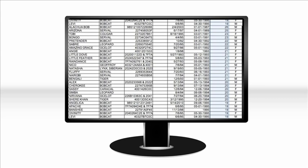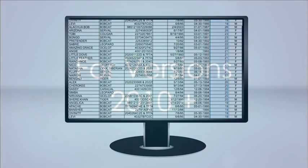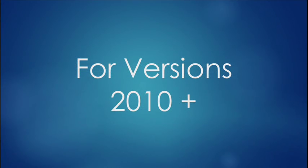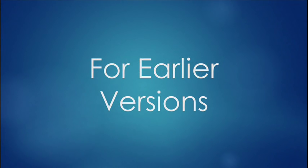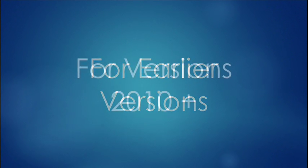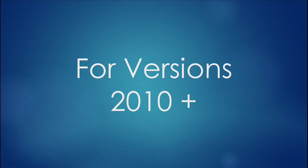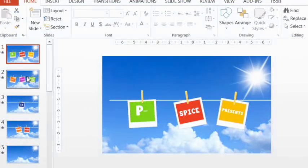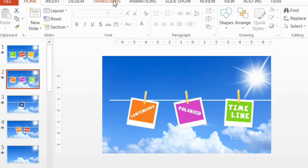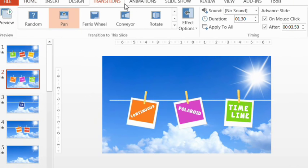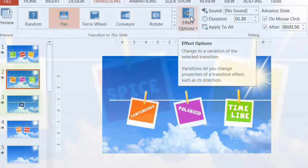The easiest way to do this is if you have version 2010 or above. If you have an earlier version, you can still get the same or a similar effect, though you're a little bit more limited. I'll explain both methods, starting with 2010 and later. For this, you just take two slides between which you want to transition, then go to Transitions and select Pan and just change the direction to what you want.